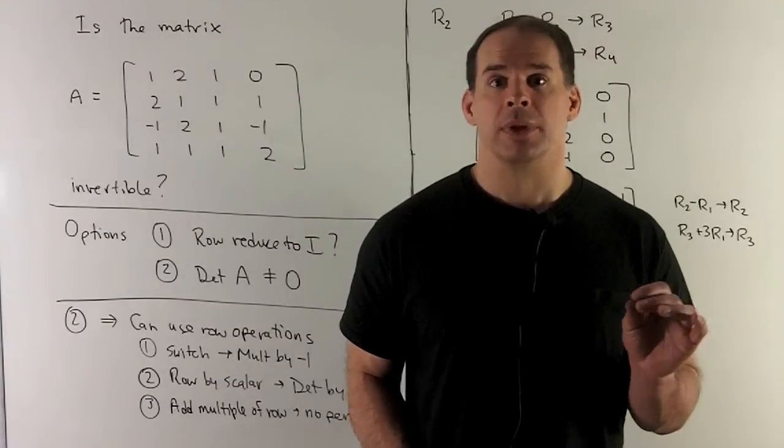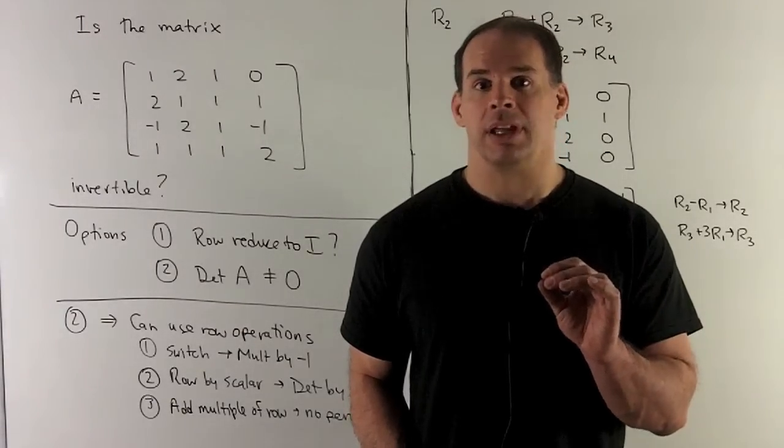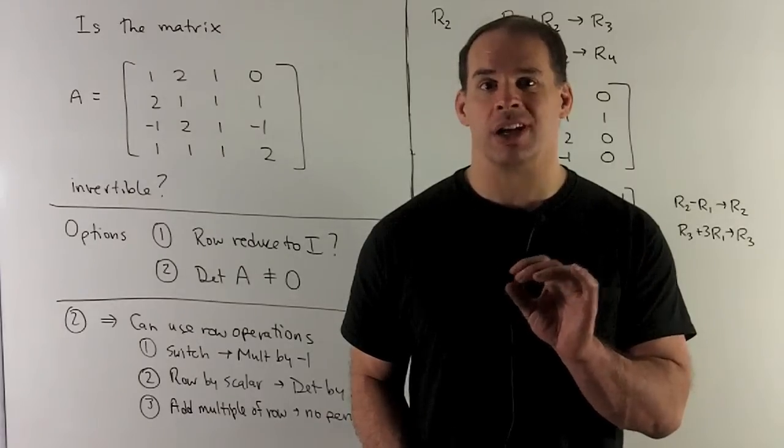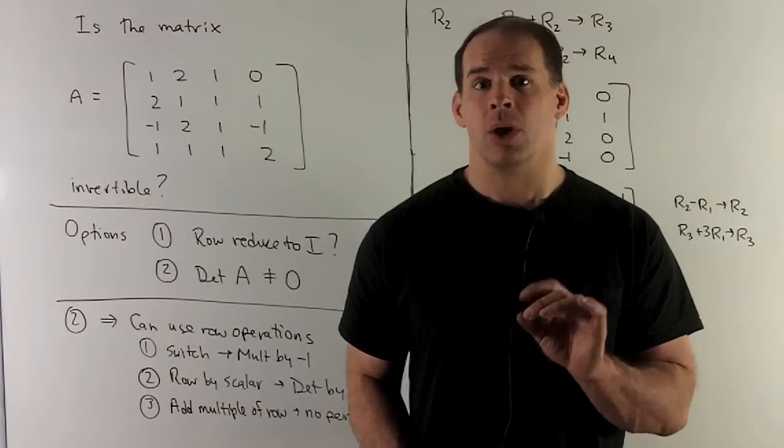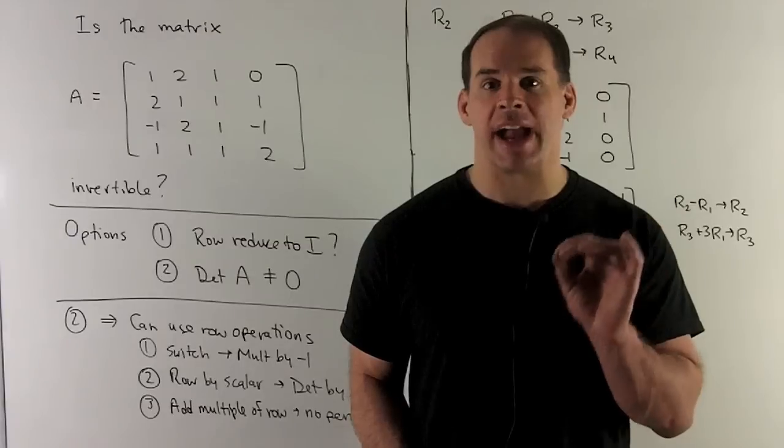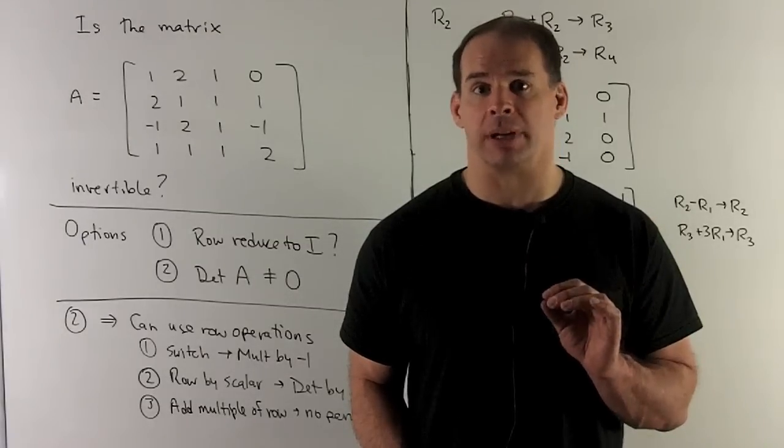So we're going to compute the determinant. The idea here, though, is not to do a cofactor expansion along any row or column. We want to apply row or column operations and track how those operations affect your determinant.